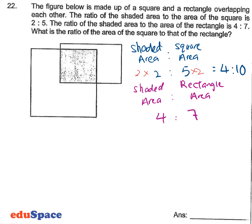Therefore, the ratio of the area of the square to the rectangle is 10 to 7. The answer is A: 10 is to 7.